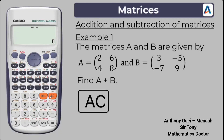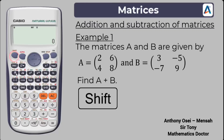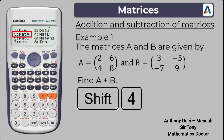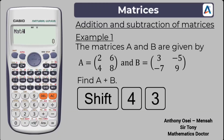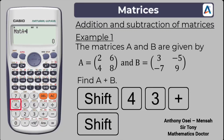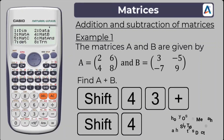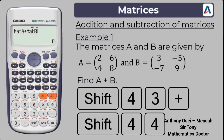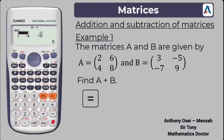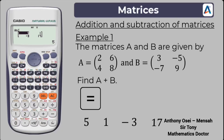Now we add matrix A to matrix B. Press shift, then number four — the matrix option. Go to matrix A, which is option number three. Press the addition sign. Then press shift, number four again, and select matrix B, which is option number four. The screen now displays matrix A plus matrix B. Press the equals sign. The result is 5, 1, negative 3, 17.